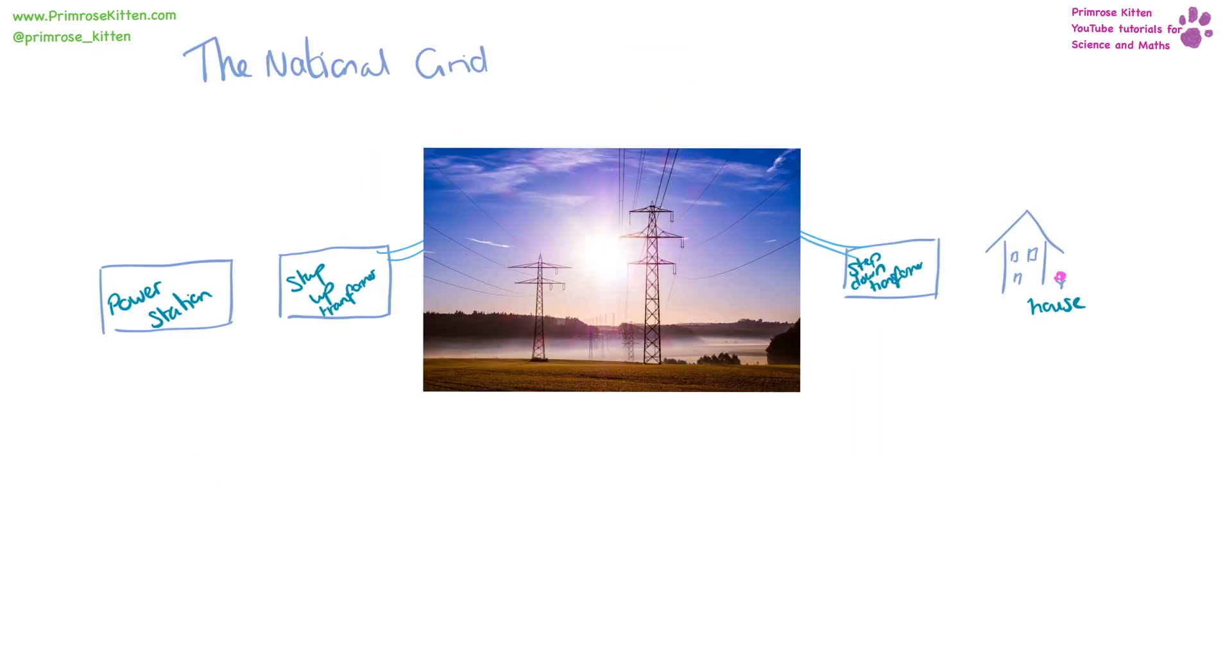The national grid is how we get electricity from power stations to our houses. The power stations generate the electricity and they move it to a step up transformer and then through a network of cables and pylons. This gets moved across the country to a step down transformer and then into our houses.